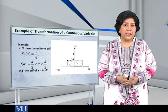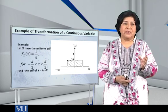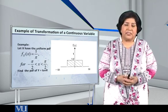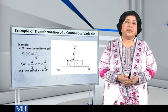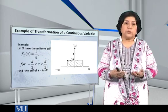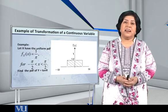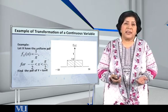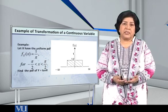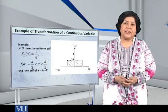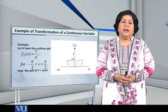So, minus π by 2 to π by 2, how much is the length, the width of the interval? Obviously, it is π by 2 plus π by 2. In other words, it is equal to π. And the height, according to the pdf, the height of that rectangle is 1 over π. So obviously, height multiplied by base, 1 over π multiplied by π, that is equal to 1. Therefore, it is a proper pdf.